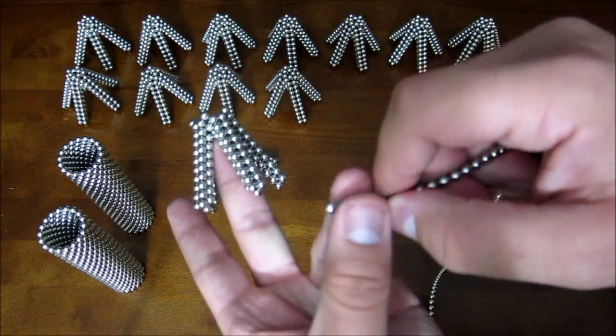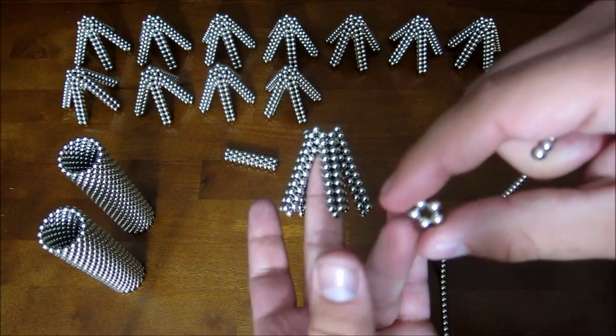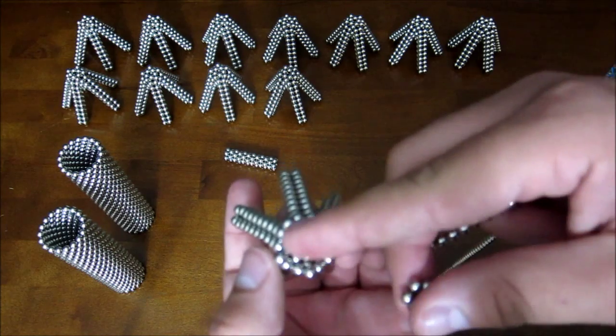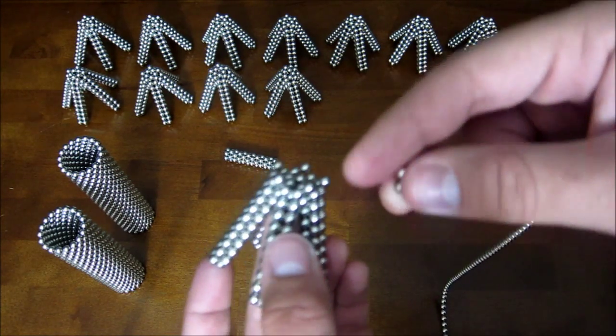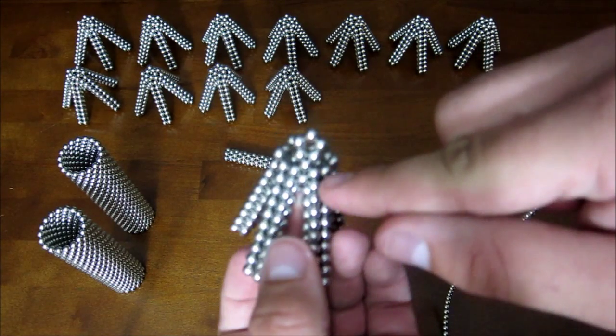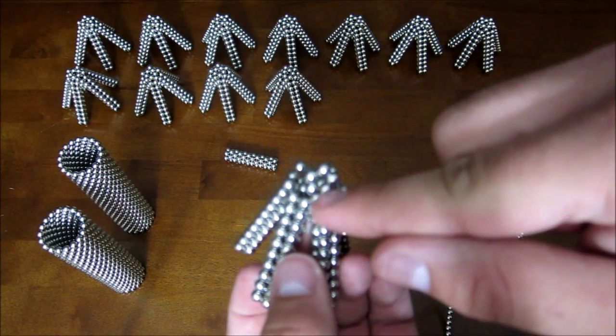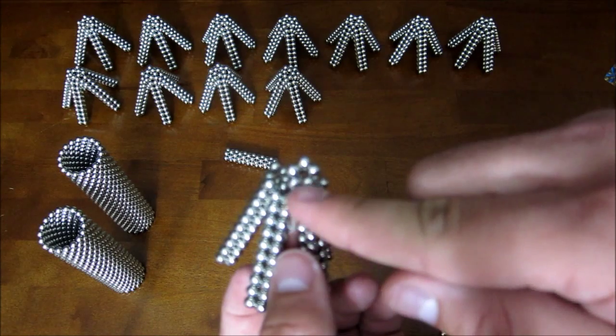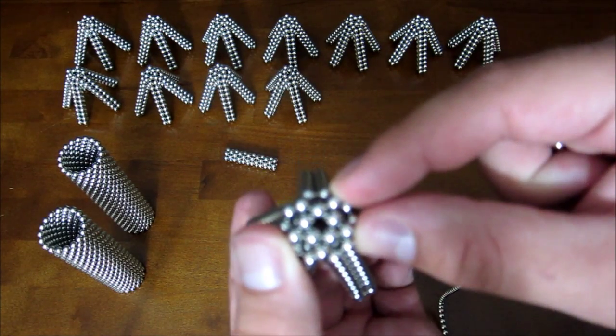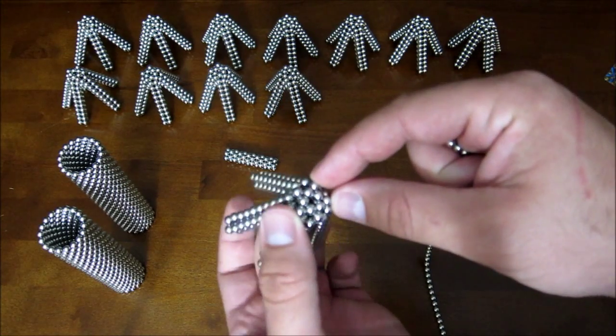Then you make another small pentagon ring and you add it on top of the one that you see there so that those free floating magnets, those 5 free floating magnets, will hook in to the new pentagon that you just added. Just like that.